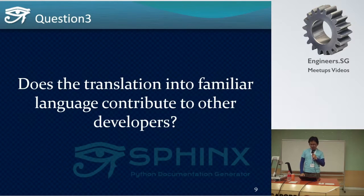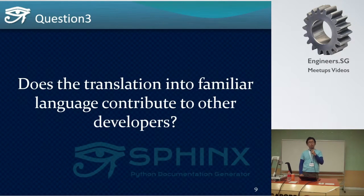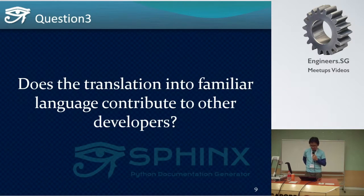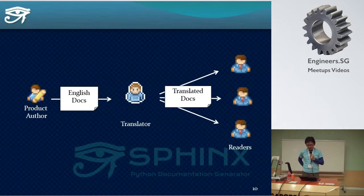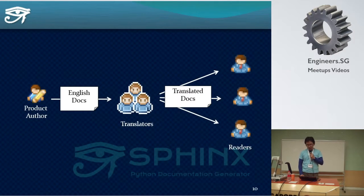Last question: many open source software projects provide documentation only in English. Do you think that translation into a familiar language contributes to other developers? Yes. In Japan, many programmers aren't familiar with English. In such situations, a translated document helps when I introduce some library to other developers. Because of this, I occasionally translate documents. By translating OSS documentation, more people will be able to use it. And if more than one person can join such translation work easily, it would be great. In this session, I'll introduce how to make a mechanism which is easy to join as a translator.